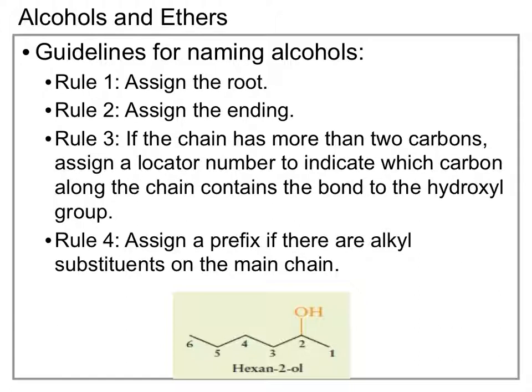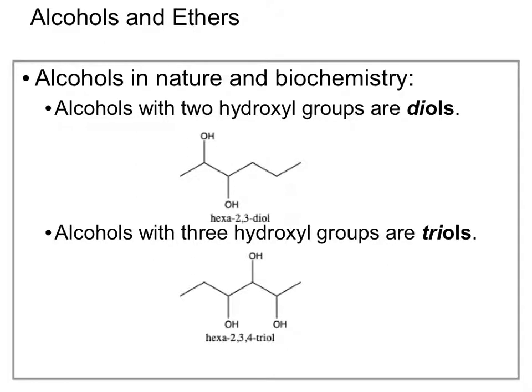Our main chain is six carbons long, giving us the root hexan-, with an -an- because they are all single bonds. Our alcohol is attached at our second carbon, giving us the name hexan-2-ol. We find alcohols everywhere in nature and in biochemistry. Alcohols with two OH groups are referred to as diols, such as hexa-2,3-diol. Alcohols with three hydroxyl groups are called triols, such as hexa-2,3,4-triol.